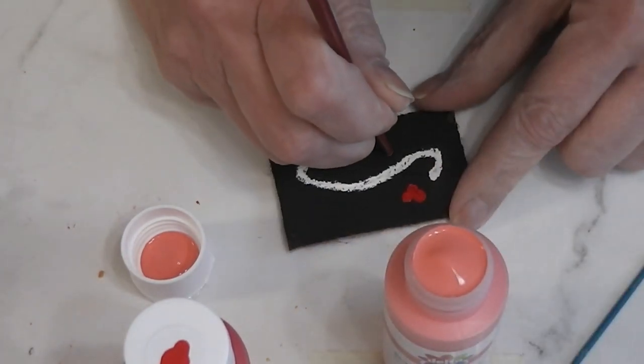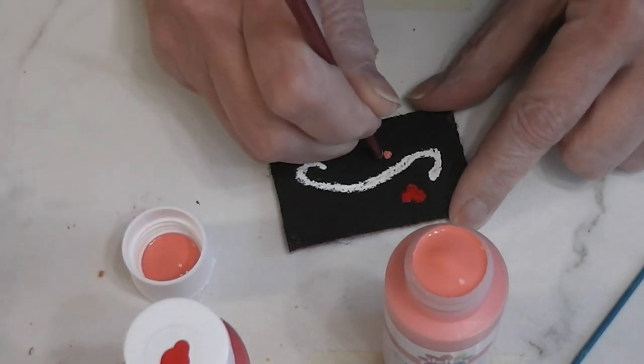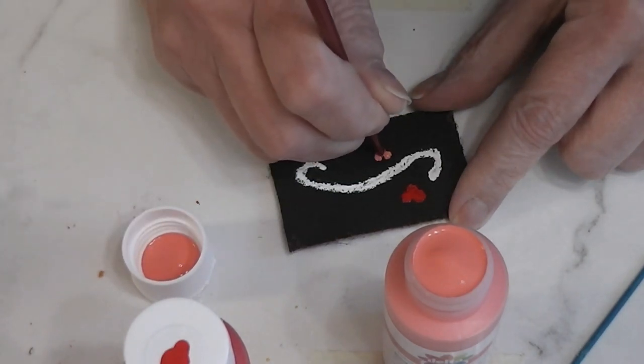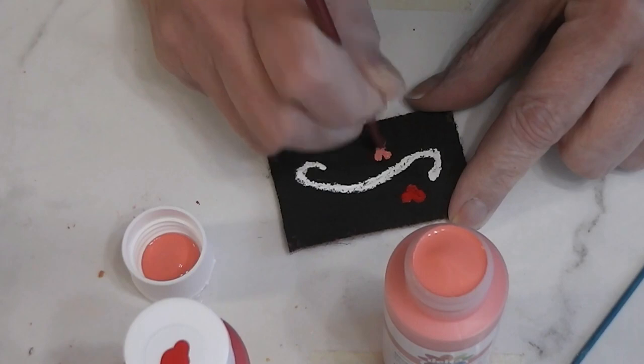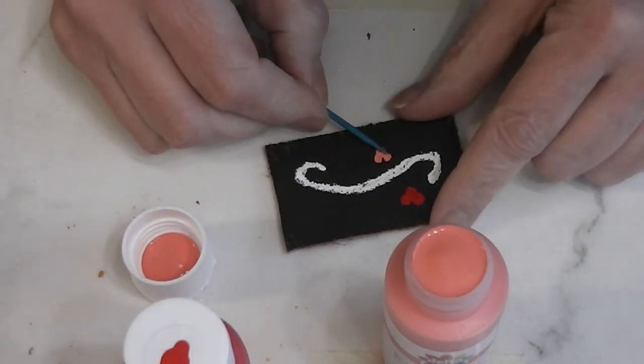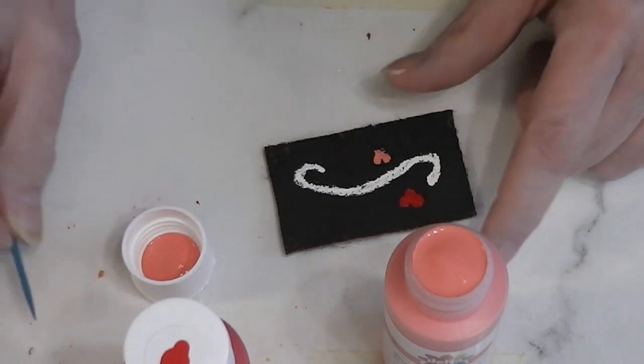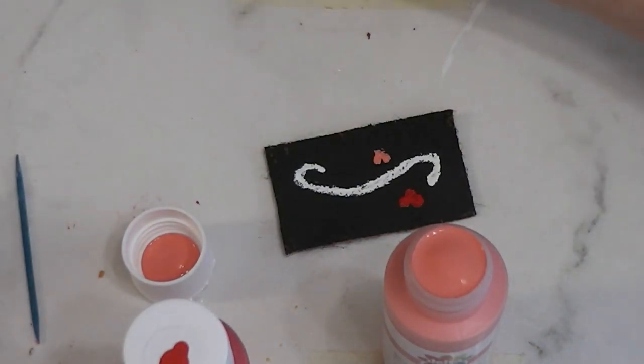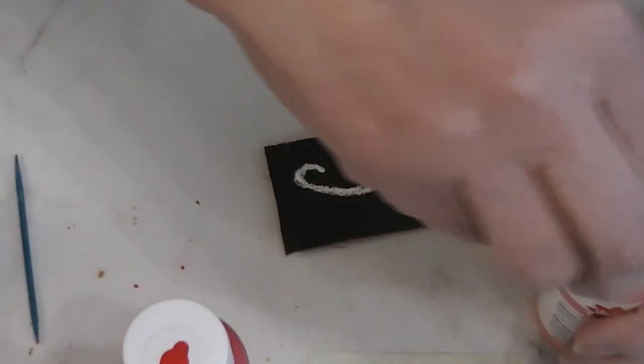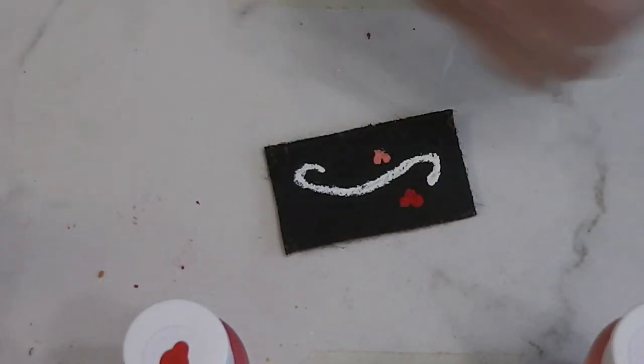I'm going to use a smaller paintbrush. Make sure you guys can see what I'm doing. Dip in, get another dot. For me, this is the easiest way to make a heart. It's much easier than trying to paint a heart with a paintbrush.